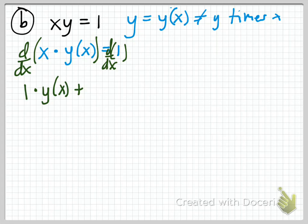So we have: the derivative of the first times the second, plus the first times the derivative of the second. The derivative of the right side is just the derivative of the constant 1, which equals zero.